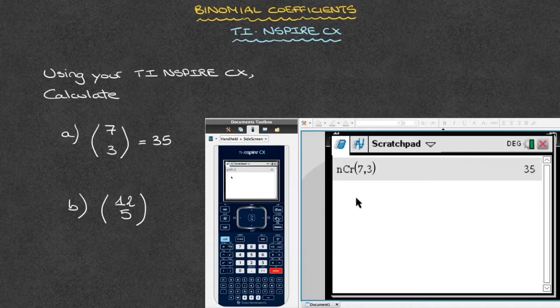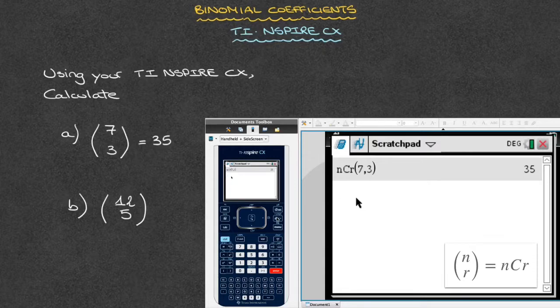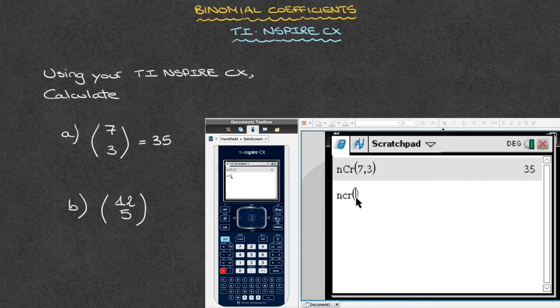For the second example, 12 choose 5, let me point out that so long as we remember that the binomial coefficient n choose r is the same thing as nCr, with our calculator we can just go right ahead and type nCr, and then open up parentheses and enter the two numbers. So for the binomial coefficient 12 choose 5,